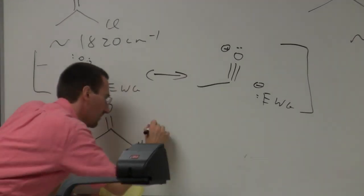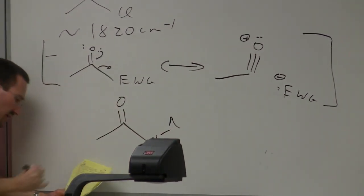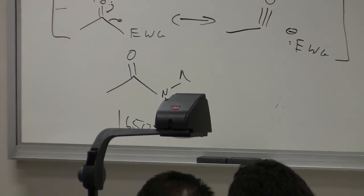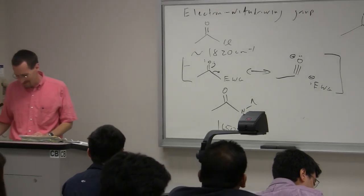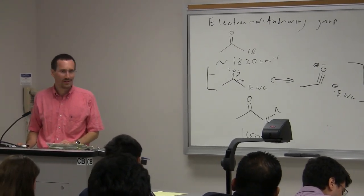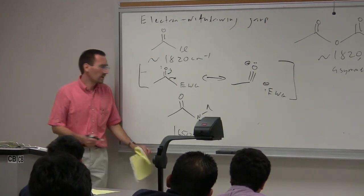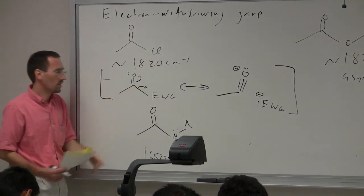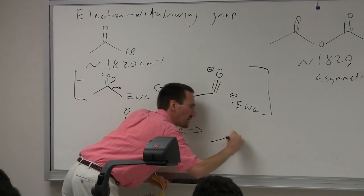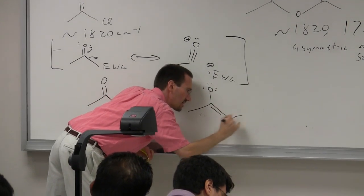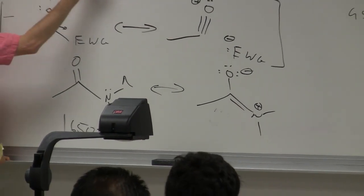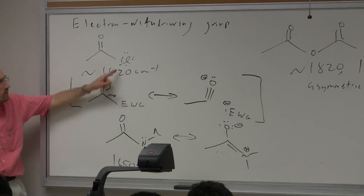For a generic amide, we said 1,650 to 1,690 cm⁻¹. That lower carbonyl frequency indicates a weaker C=O bond. Nitrogen is electron donating by resonance: you can write a resonance structure with a C–N double bond and a C–O single bond, giving the carbonyl more single bond character. So it's kind of the opposite of what you have with acid chlorides.